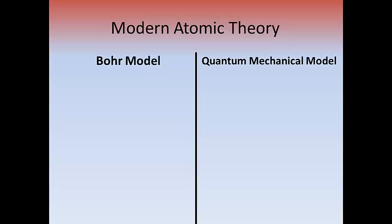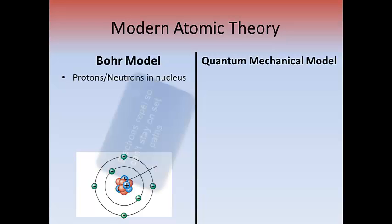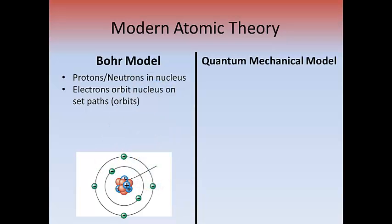So anyway, let's talk about the Bohr model first. In the Bohr model, it's what you typically think of as the model of the atom. I want you to make this little sketch down here on the bottom of your section. In the Bohr model, the protons and neutrons are in the nucleus, and those electrons orbit the nucleus on set paths, and what I always imagine is like runners on a track. Basically, those electrons are just going around and around until they stop.